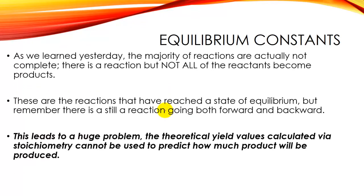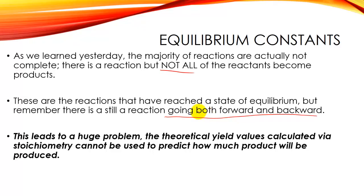As we previously learned, we think a lot of reactions go to completion, but in reality they don't. To our naked eye, it looks like no more product is being created, but that's because it's reached the state of equilibrium where the forward reaction and backward reaction rates equal each other. So maybe I'm creating five products, but at the same time I'm decomposing five products back into reactants. Although I've gained five, I've lost five, so there's no change at all.